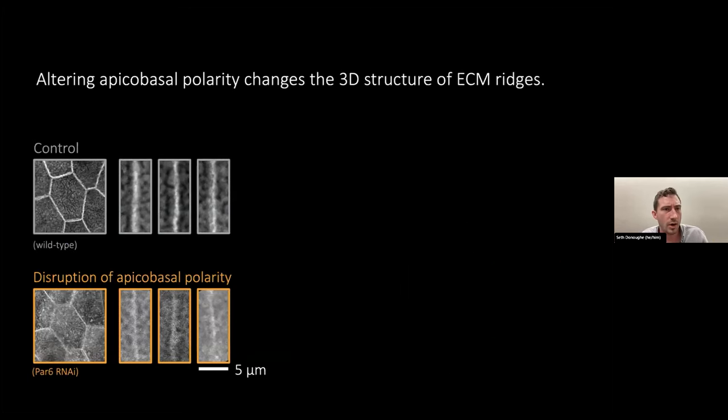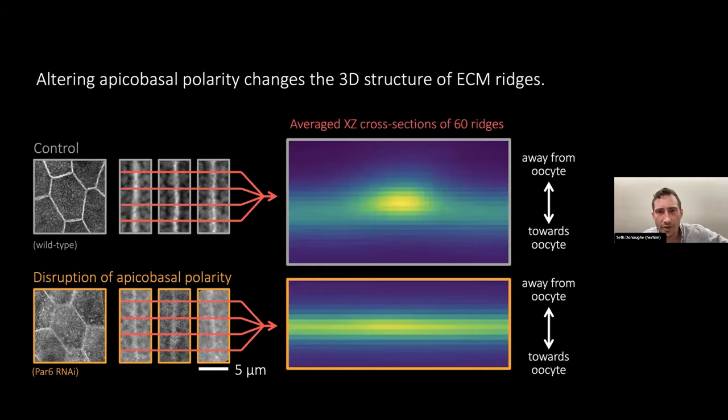We can also alter the 3D shape of these ridges. If you alter the apical-basal polarity, you can find out that the ridges have actually become flattened. We can do that by optically sectioning through lots of these ridges and then computationally combining them together. These are average X-Z cross-sections of 60 ridges. You can see that the enrichment of protein at the ridges has been lost, or almost entirely lost, in this genotype.